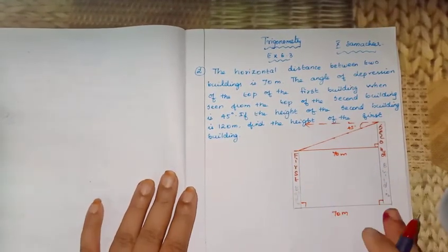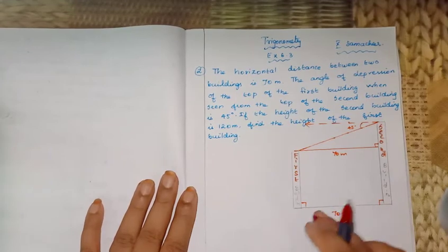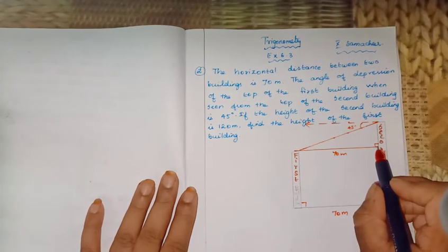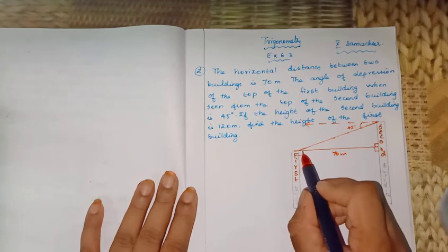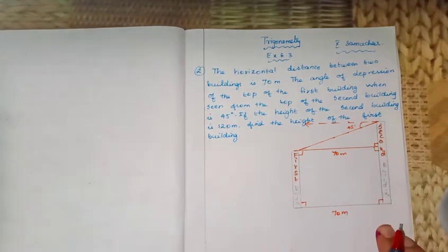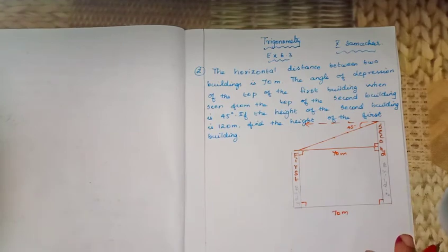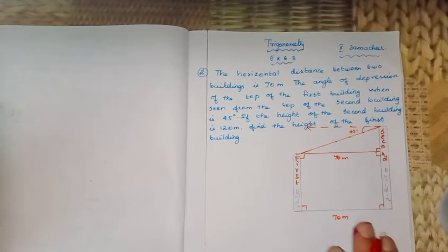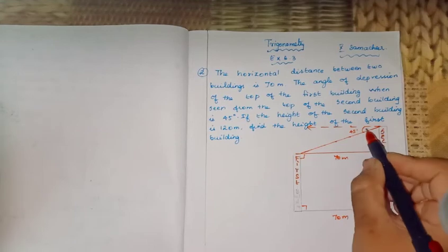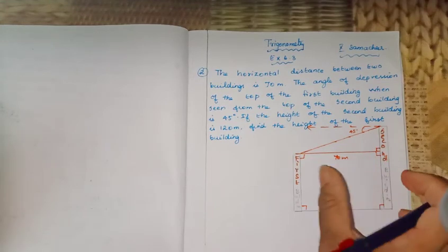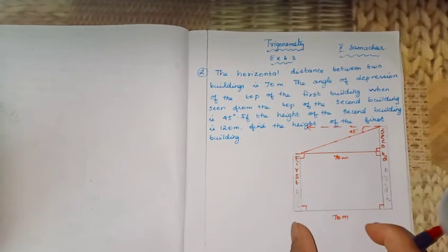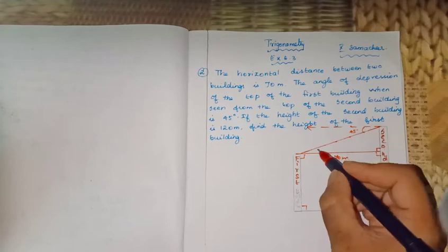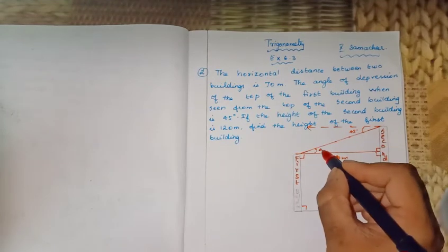Parallel to the ground, you can see 90 degrees at each corner. Since we have rectangles, opposite sides are equal. In the right angle triangle, this is 45 degrees, and since the line is parallel to the ground, this angle is also 45 degrees.